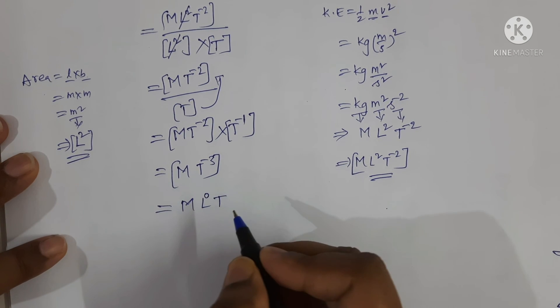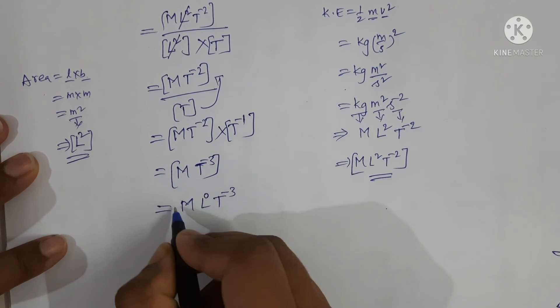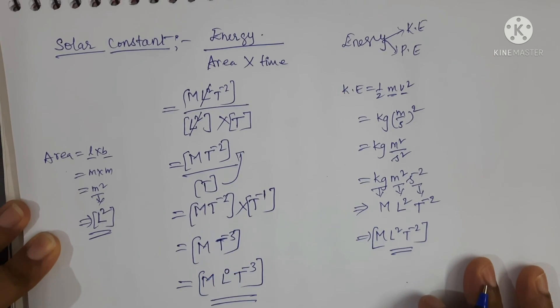Here M is there. Length term is absent, so L power 0. And here T power minus 3. This is the dimensional formula for solar constant.